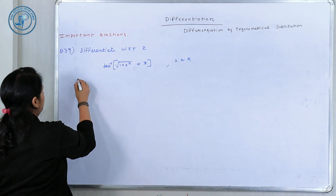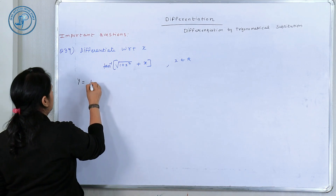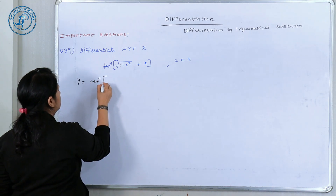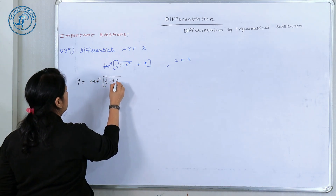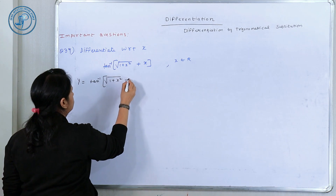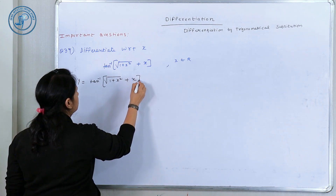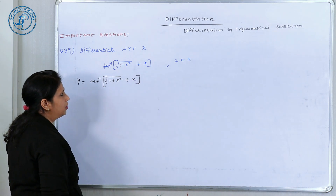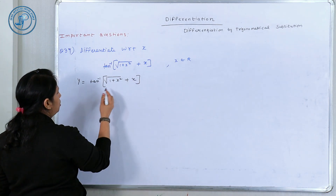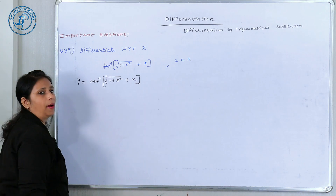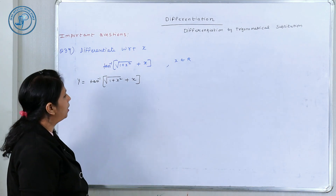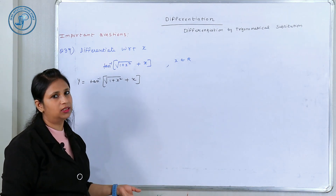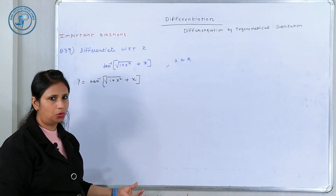We have a question: y is equal to tan inverse of √(x / (1 + x² + x)), where x belongs to ℝ. Here we need to consider — I have told you about double angle and triple angle formula substitution.